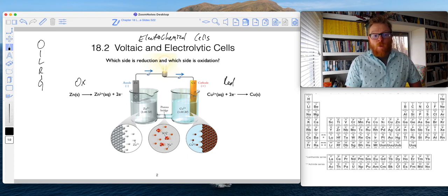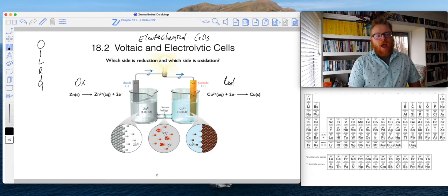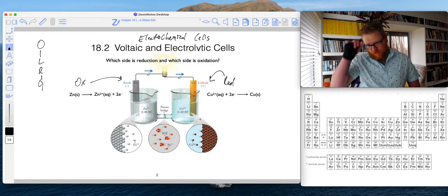So now what happens here—oxidation occurs at the anode, reduction occurs at the cathode. You need to know that.